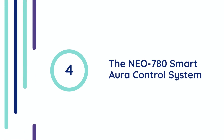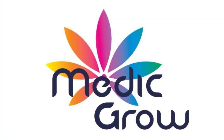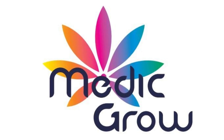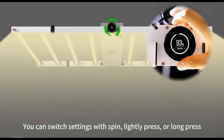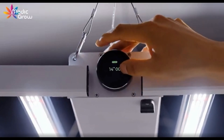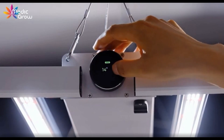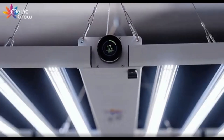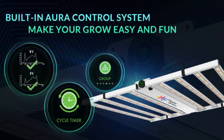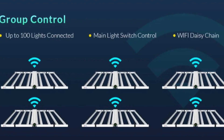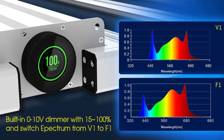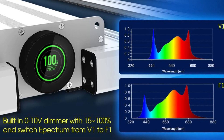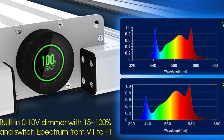Chapter 4: The NEO 780 Smart Aura Control System. Before we conclude, we'd like to once again thank our sponsor, MedicGrow. The NEO 780 Smart Aura Control System is a true game changer for all cannabis enthusiasts. This powerful 780-watt grow light features the Aura Control System, offering precise control with just a spin, light press, or long press. You can seamlessly manage settings like cycle timers, dimming, sunrise and sunset modes, and even group control up to 100 lights with its Wi-Fi mesh connectivity. The NEO 780 offers two full spectrums — V1 for vegetative growth and F1 for flowering — ensuring your plants get exactly what they need at each stage.